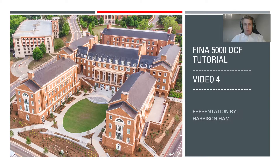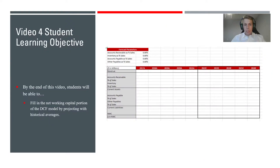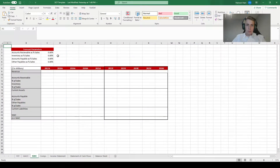Hello everyone and welcome to the fourth video in the FINA 5000 DCF tutorial series. Today we're going to be working on projecting out net working capital so that we can calculate the change in net working capital, which is the last line we need to fill in our free cash flow calculations. We will project out four different balance sheet items based on their historical percentages as a percentage of sales, and the goal is to fill out the net working capital tab of the DCF template.